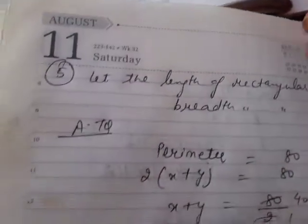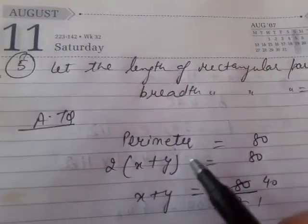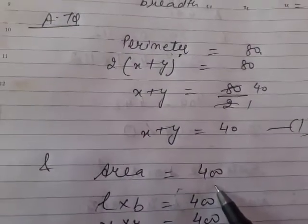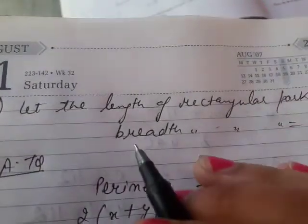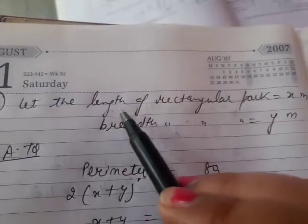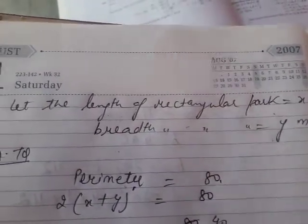Now let's start the fifth question in which we have given that a rectangular park has perimeter 80 meters and area is 400 square meters. Find length and breadth. So let's take length as x meters and breadth as y meters. We will take two different variables.